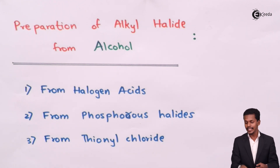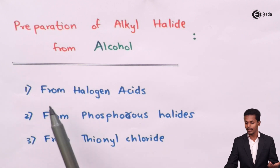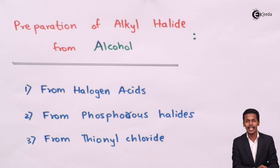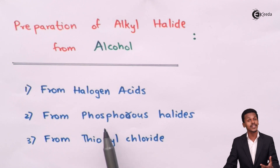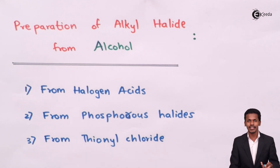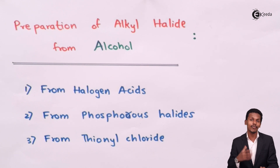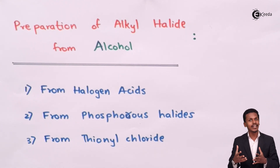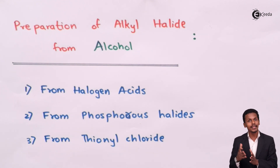The first method is preparing alkyl halide using halogen acids like HBr, HI, and HCl — we can react the alcohol with HCl, HBr, or HI to produce the alkyl halide. Secondly, we will discuss how to prepare alkyl halide using alcohol along with phosphorus halides such as PCl₃ and PBr₃. Lastly, we will cover using alcohol with thionyl chloride.